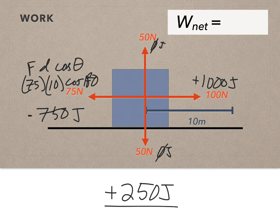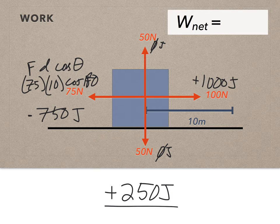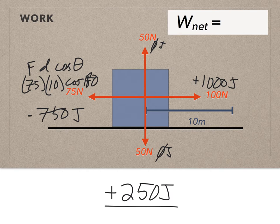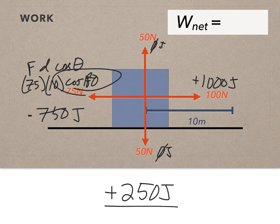This is a good time to talk about friction and work. That free-body diagram shows 100 N applied right, 50 N normal up, 50 N weight down, and 75 N friction to the left. Friction always acts parallel to the surface and opposite to motion. So if motion is to the right, friction acts left — meaning friction always has cosine 180 in the work equation, and cosine 180 is always −1. Friction always does negative work. It's always stealing energy from the system and throwing it out as sound, thermal energy, or whatever.